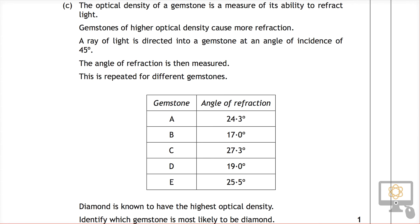Let's look at question 5c from the National 5 2015 physics paper. It says the optical density of a gemstone is a measure of its ability to refract light.